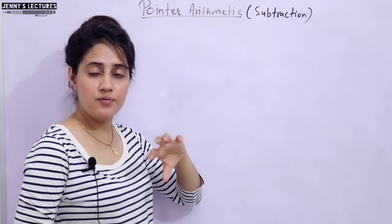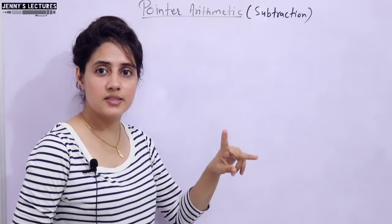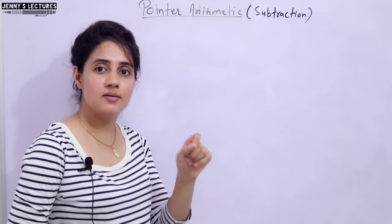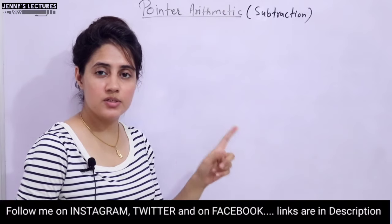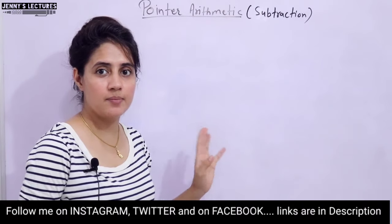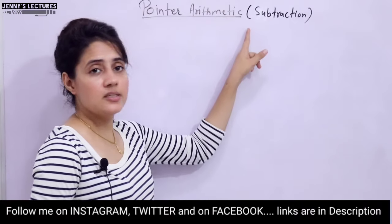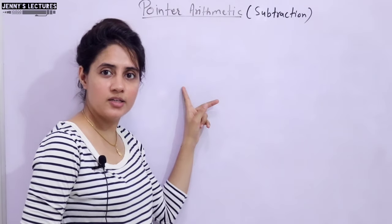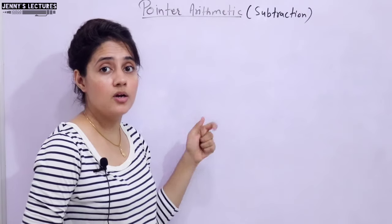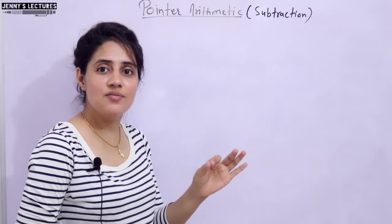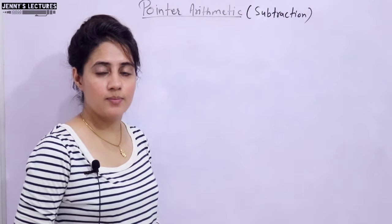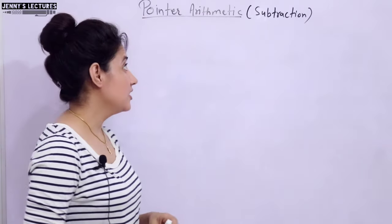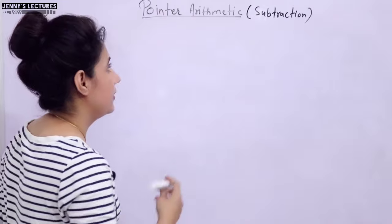Can we subtract two pointer variables? Yes. Can we add two pointers? No. We can only add an integer to a pointer, which we discussed in the previous video. Now, we can subtract one pointer variable from another pointer, or we can subtract any integer value from a pointer variable. Both cases we will discuss here with the help of a program.